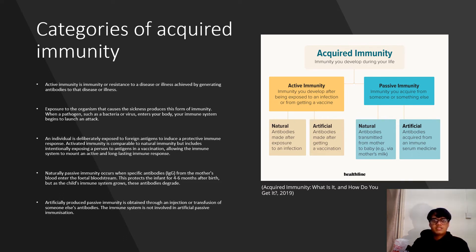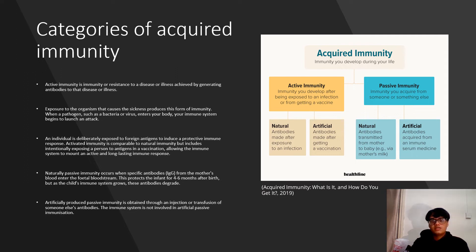Artificially induced passive immunity is obtained through an injection or transfusion of someone else's antibodies. However, the protection only lasts for a few weeks because the antibodies gradually break down and do not naturally regenerate. The immune system is not actively involved in artificially passive immunization.